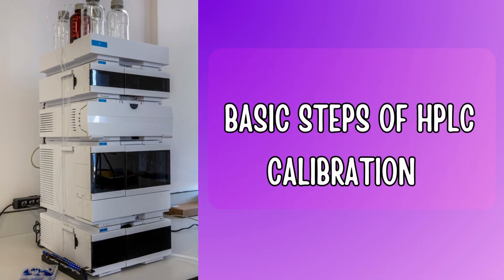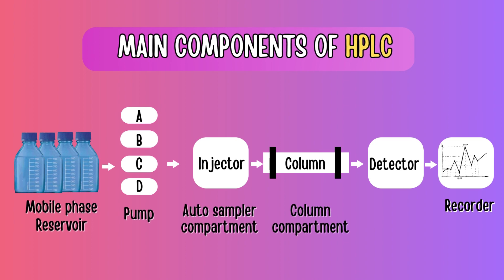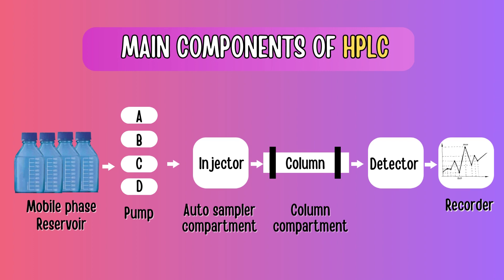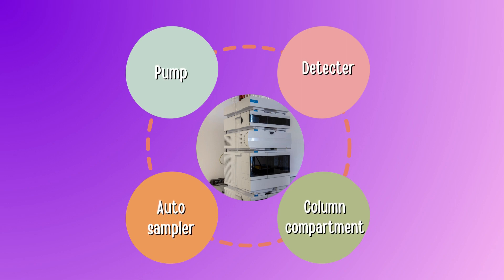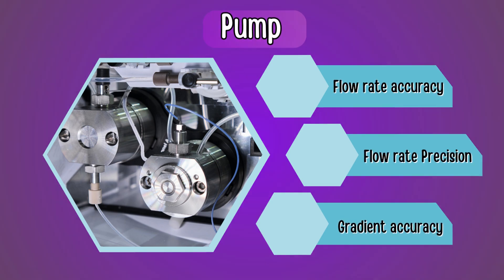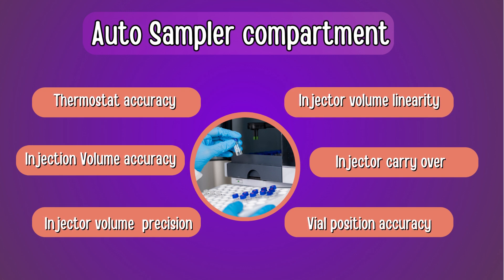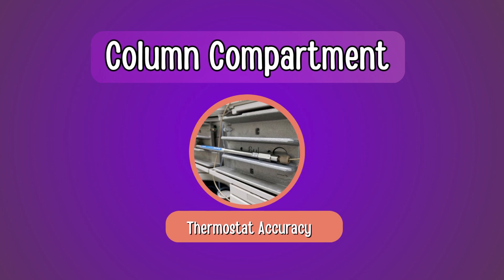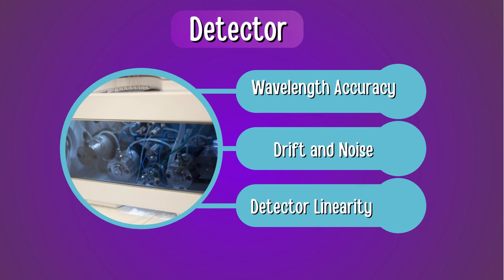In this video, I will explain the basic steps of HPLC calibration. The main components of an HPLC system are Mobile Phase Reservoir, Pump, Auto Sampler Compartment, Column Compartment, Detector, and Recorder. Tests carried out during HPLC calibration for UV and PDA detectors include pump-related tests: Flowrate Accuracy, Flowrate Precision, and Gradient Accuracy. For the Auto Sampler Compartment: Thermostat Accuracy, Injection Volume Accuracy, Injector Volume Precision, Injector Volume Linearity, Injector Carryover, and Vial Position Accuracy. For Column Compartment: Thermostat Accuracy. For the Detector: Wavelength Accuracy by Caffeine, Drift and Noise, and Detector Linearity.